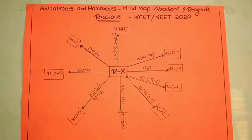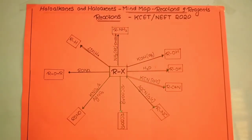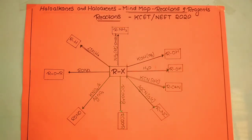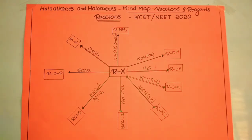In the previous video we discussed the preparation of haloalkanes and haloarenes, including the reagents and how to remember them. When a particular reagent is given, you can predict the product — that is the main principle of this mind map. Now this video is about the reactions of haloalkanes and haloarenes.